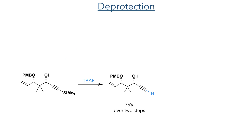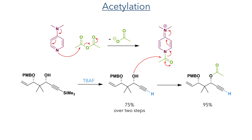In the next step the TMS group was removed using TBAF and the alcohol was then acetylated using a mixture of acetic anhydride and DMAP. The DMAP acts as a nucleophilic catalyst, attacking the acetic anhydride and forming a more electrophilic acyl group, which then added to the alcohol in a 95% yield, completing the synthesis of fragment one.